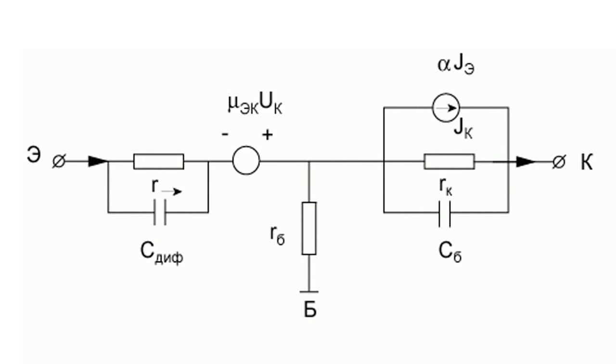It is one of the ways of showing the interrelation in the form of equivalent circuits, when real processes in nonlinear devices can be replaced by a set of active elements — that is, current sources and voltage sources — and passive elements, namely resistors and capacitors, which adequately describe the interrelation of input and output parameters.